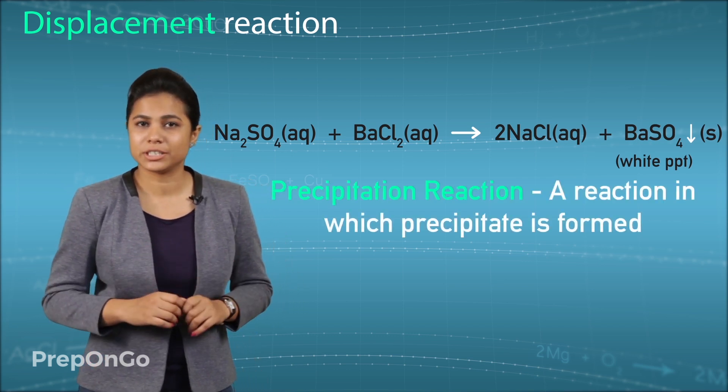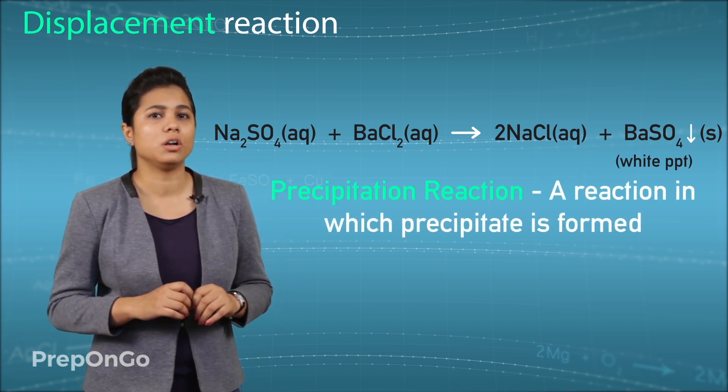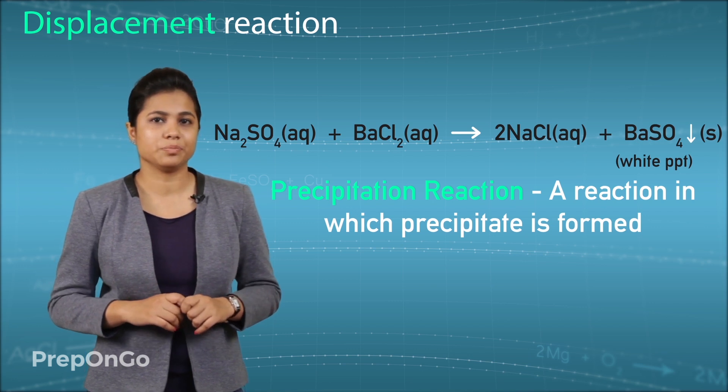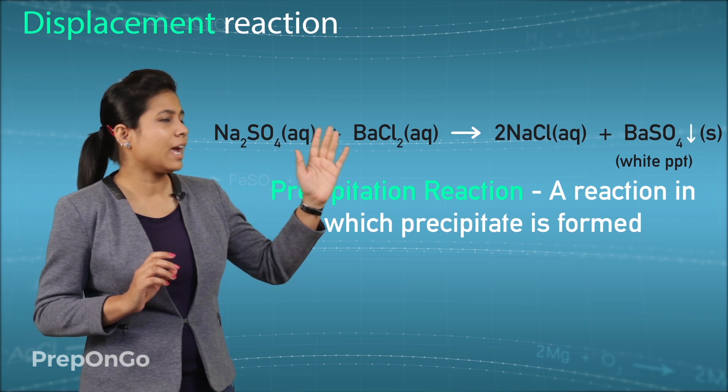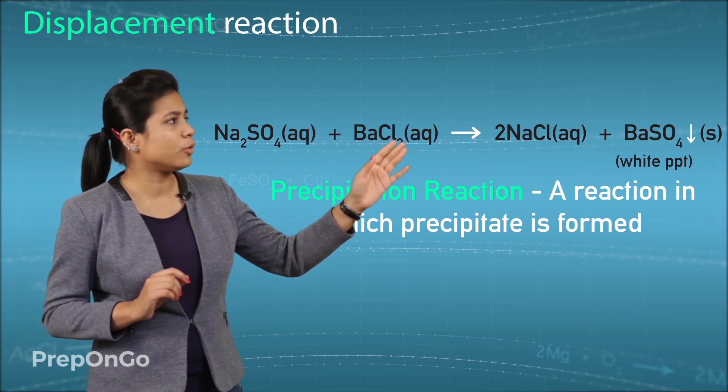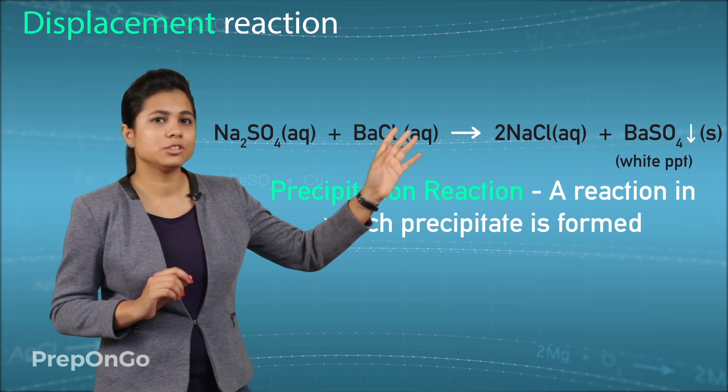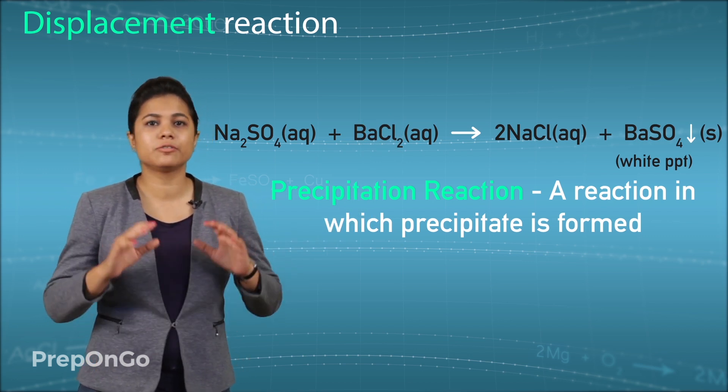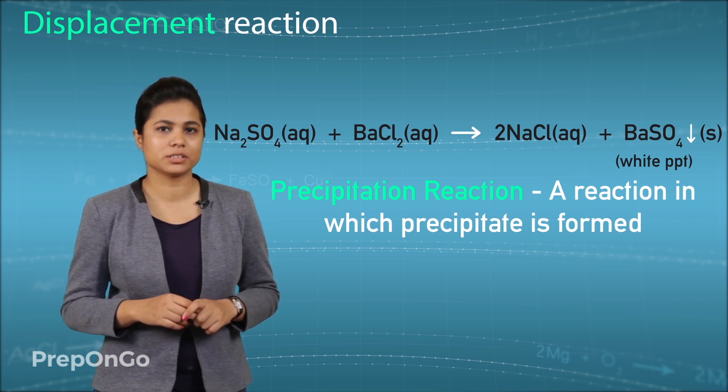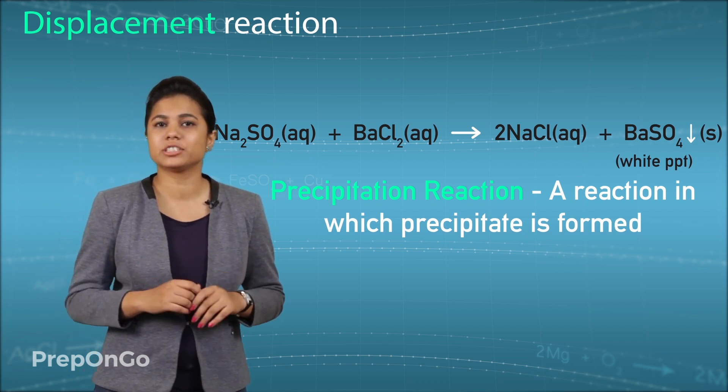The reaction in which precipitate is formed is also called a precipitation reaction. So the reaction in which sodium sulphate has reacted with barium chloride to form barium sulphate and sodium chloride. The white precipitate is of barium sulphate which is formed by the sulphate and the barium ions, and the sodium chloride remains dissolved in the solution.